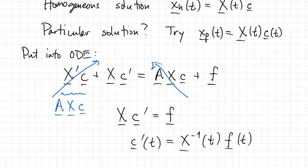So if we choose C this way, we get a particular solution. In other words, if we can integrate this expression, then we'll get C of T and that tells us what X_P should be.